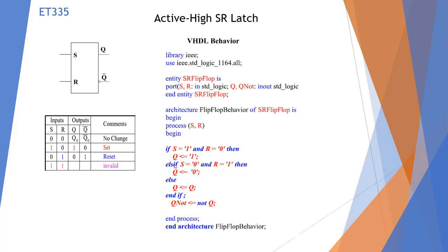Else if means jump to the next condition if the first isn't correct. If S is 0 and R is 1, then Q is reset — output is 0. If neither condition is true, don't change: Q equals Q. Q_NOT is always equal to NOT Q — this NOT is a logic NOT, not a name.